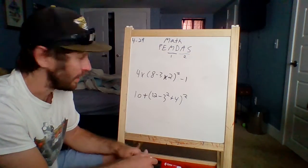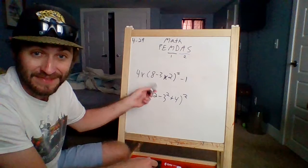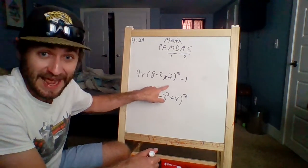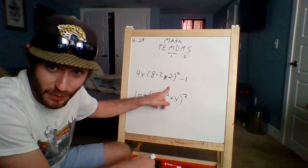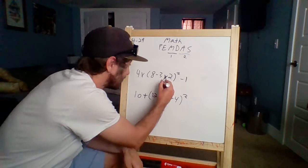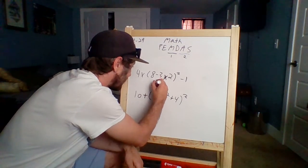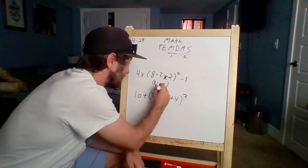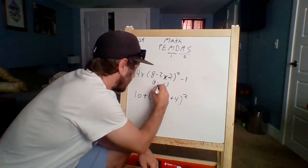But in that parentheses, do I have subtraction and multiplication? I do. What do I need to do first? Yeah, three times two, six. Eight minus six. What is eight minus six? Is two.